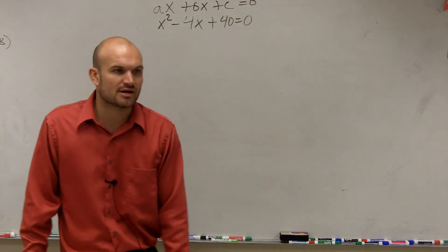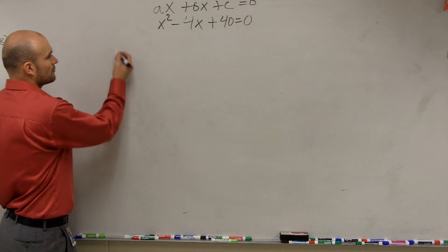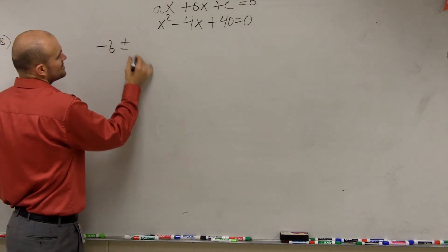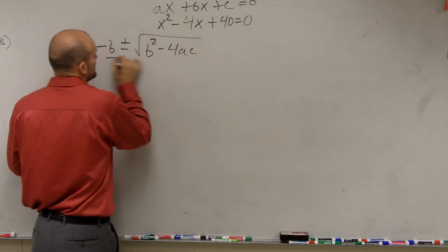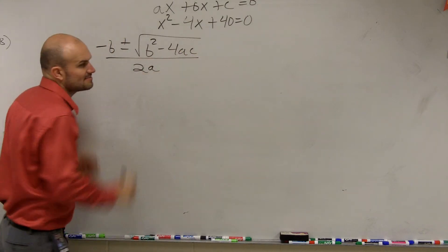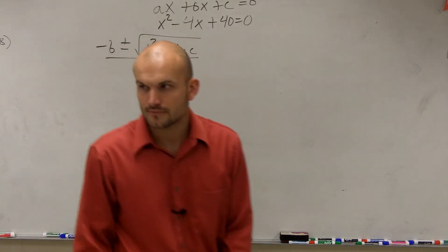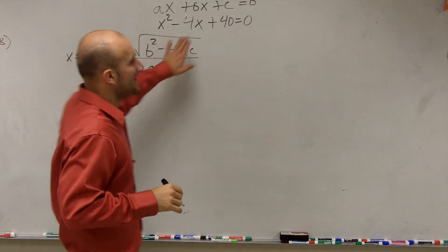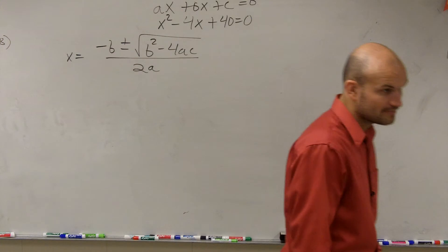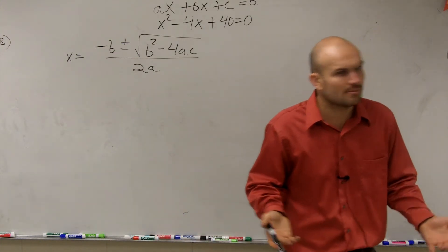So to make sure we do the quadratic formula, we obviously have to remember the quadratic formula. Opposite of b, plus or minus the square root of b squared, minus 4 times a times c, all over 2 times a. x equals. That is my quadratic in standard form.